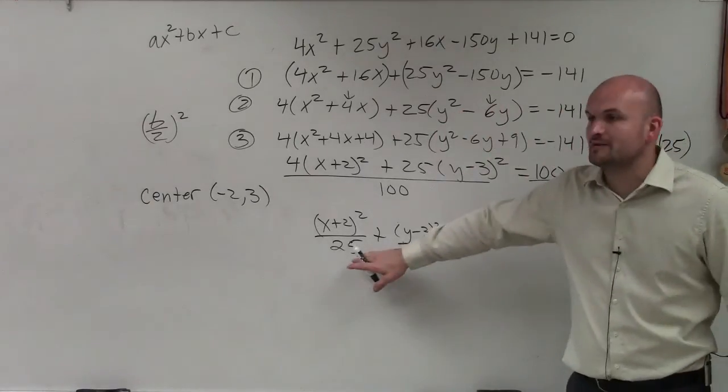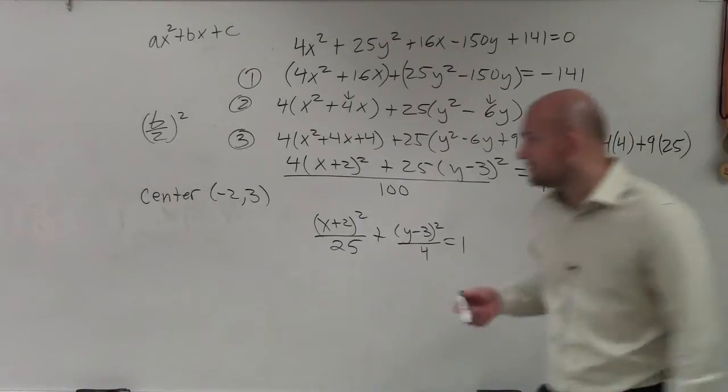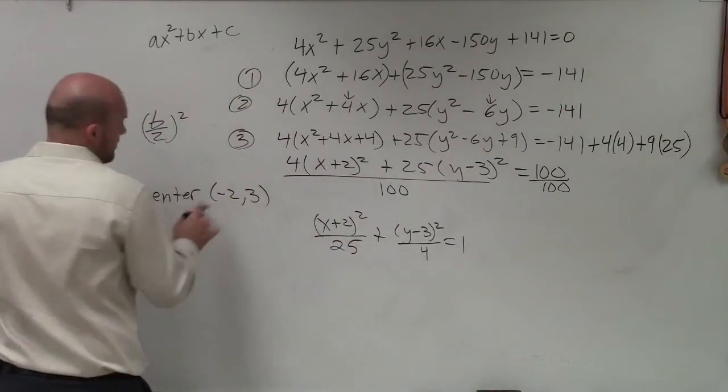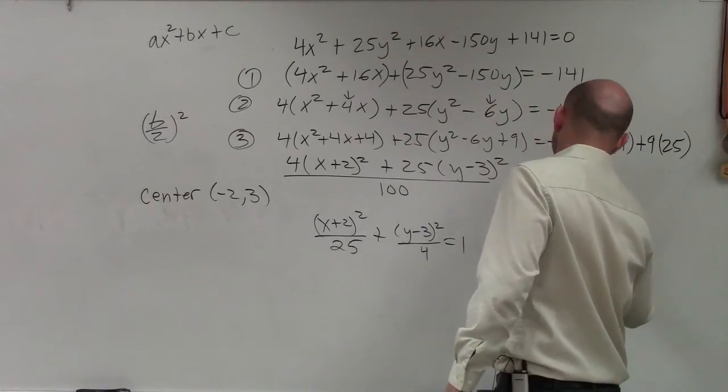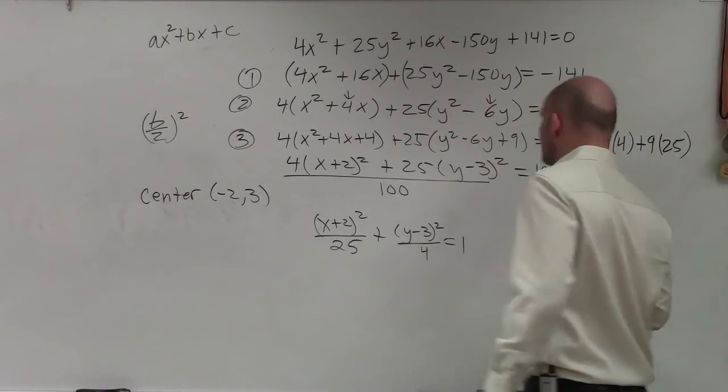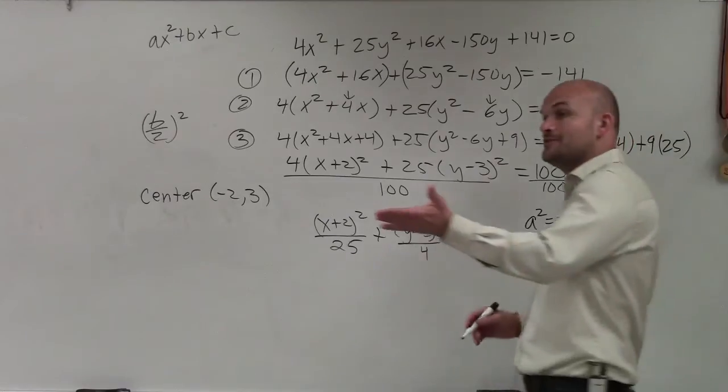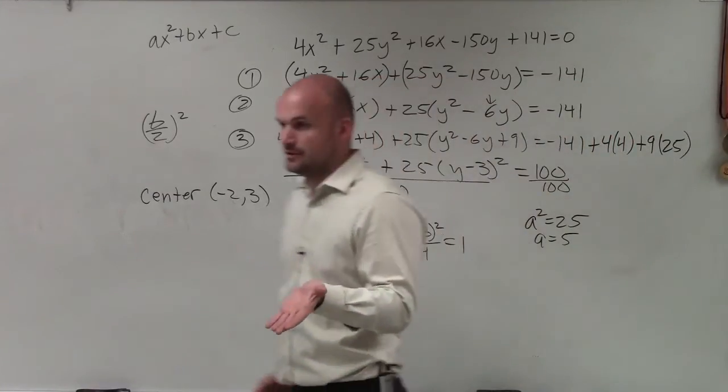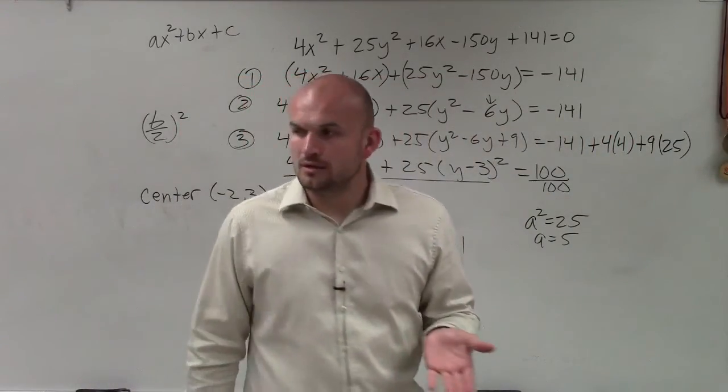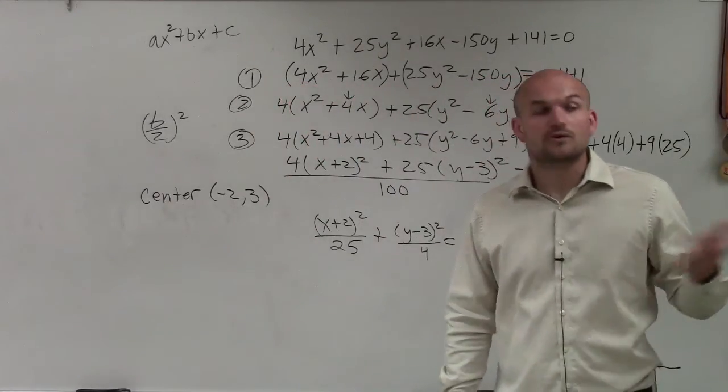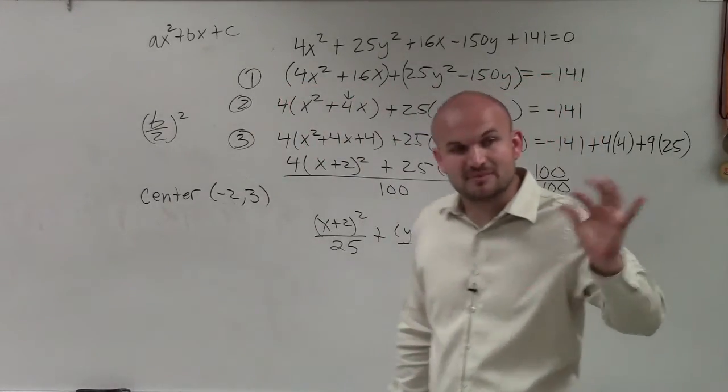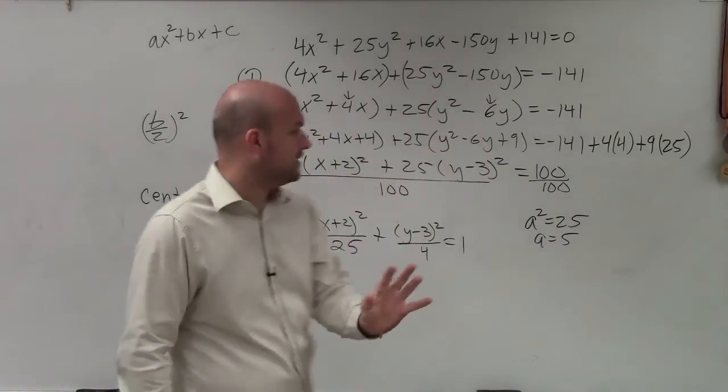So therefore, is that going to be a or b? That's a. Perfect. So that's a squared, is 25. Therefore, a equals 5, right? And then do you remember what a represented? Correct. A represents the length from the center to a vertice.